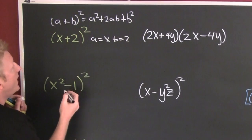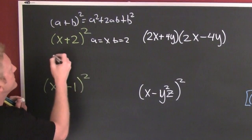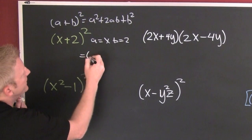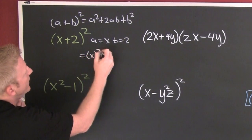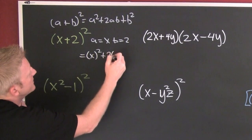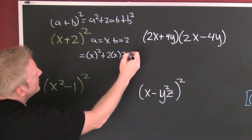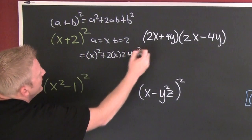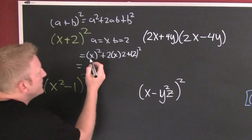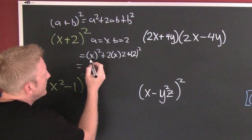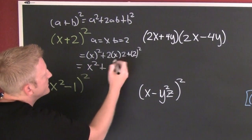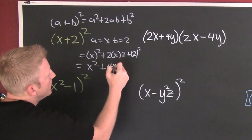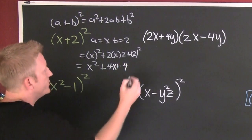So what do you do? Everywhere you see an a, you put x. So then this thing is going to multiply out to be x squared plus 2 times x times 2 plus 2 squared. Clean it up — it's going to be x squared plus 4x plus 4.